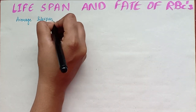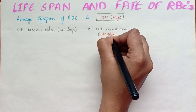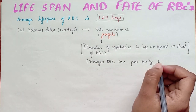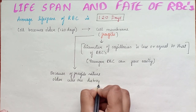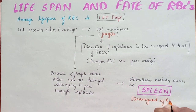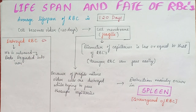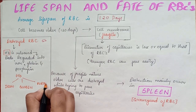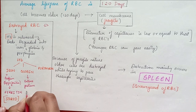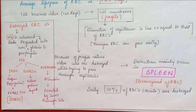Lifespan and fate of RBCs: the average lifespan of an RBC is 120 days. As the cell becomes older, the cell membrane becomes fragile. Since the diameter of capillaries is less than or equal to that of RBCs, younger RBCs can pass easily, but older fragile cells are destroyed while trying to pass through. Destruction mainly occurs in the spleen, also called the graveyard of RBCs. From destroyed RBCs, hemoglobin is released and degraded into iron, globin, and porphyrin. Iron combines with the protein apoferritin to form ferritin, which is stored in the body. Globin enters the protein depot, and porphyrin is degraded to eventually form bilirubin, which is excreted by the liver through bile. Daily, 10% of RBCs are destroyed.